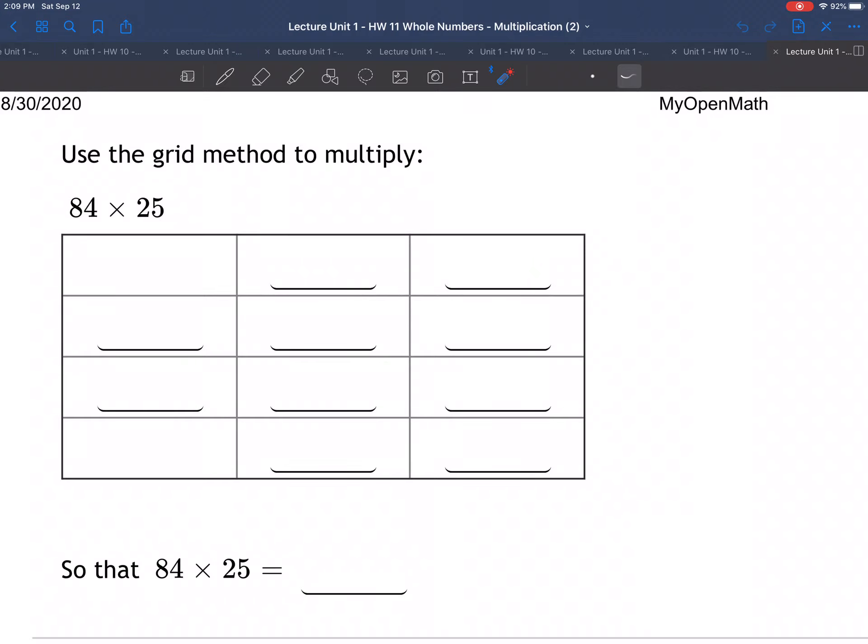Okay, on this question they're asking us to use the grid method to multiply 84 times 25. So what this is about, this is a different way to multiply numbers. So the normal way, let me do the normal way over here, which you already know quite well. So here is the normal way to multiply a couple of numbers. You know what to do, right?